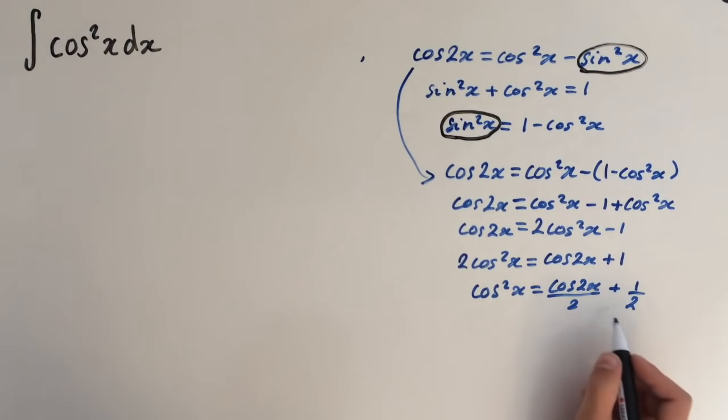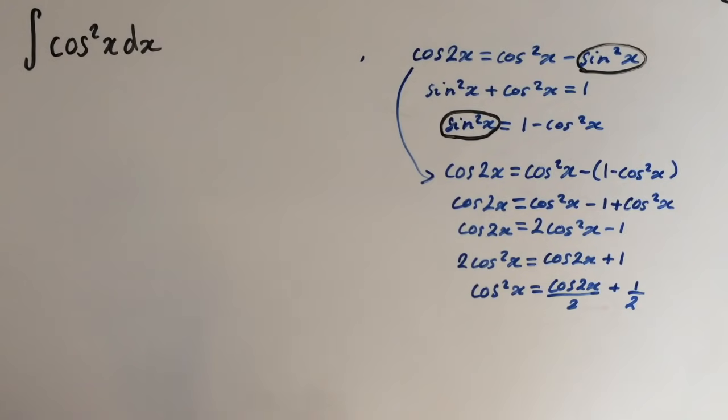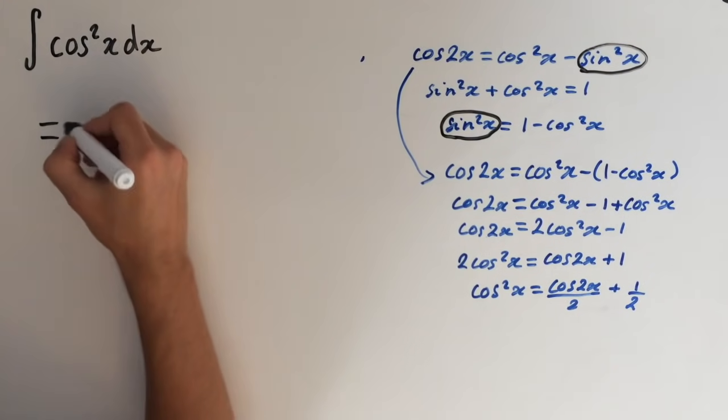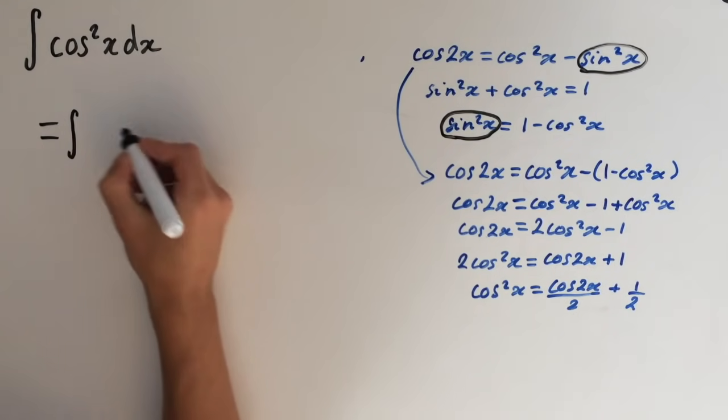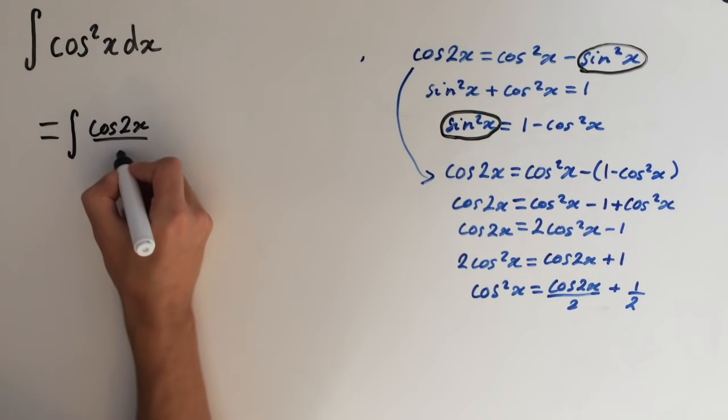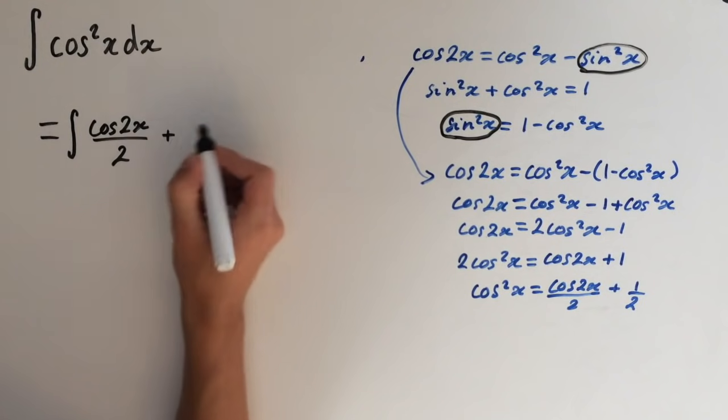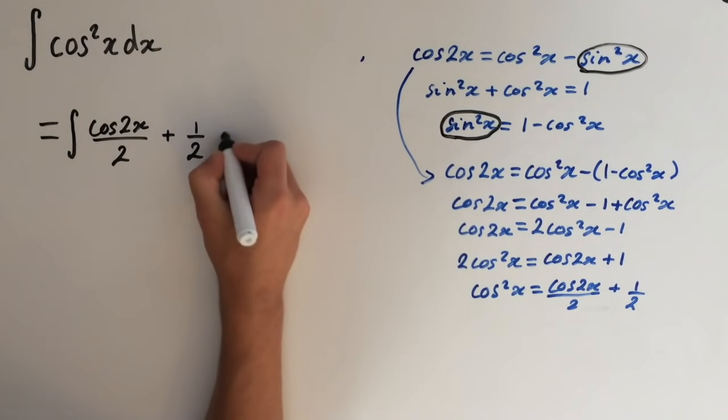So let's go ahead and substitute this in. This equals the integral of cosine 2x over 2 plus 1 half dx.